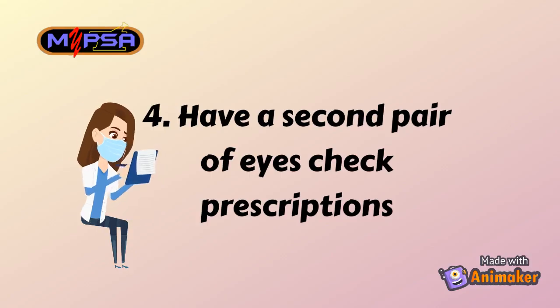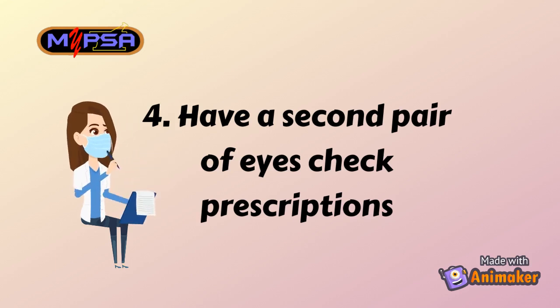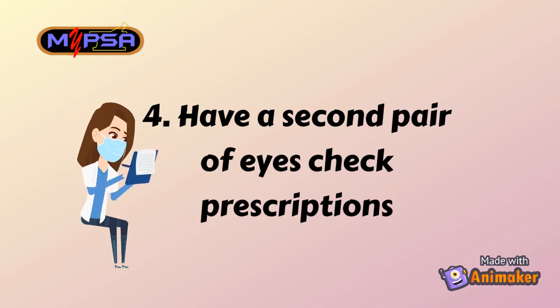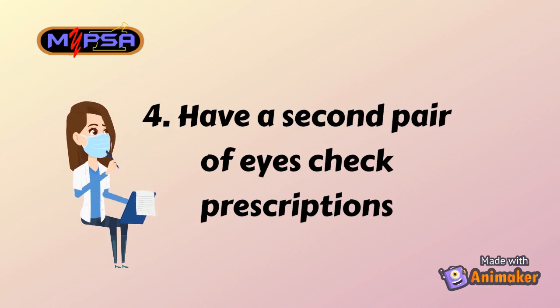Always be alert and have a second pair of eyes check prescriptions. One way to prevent human error is by involving a second human, either a pharmacist or pharmacist assistant, in the dispensing process.